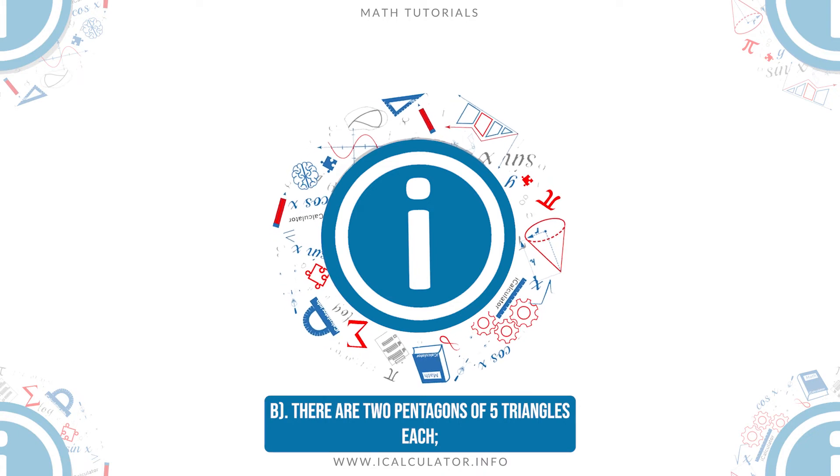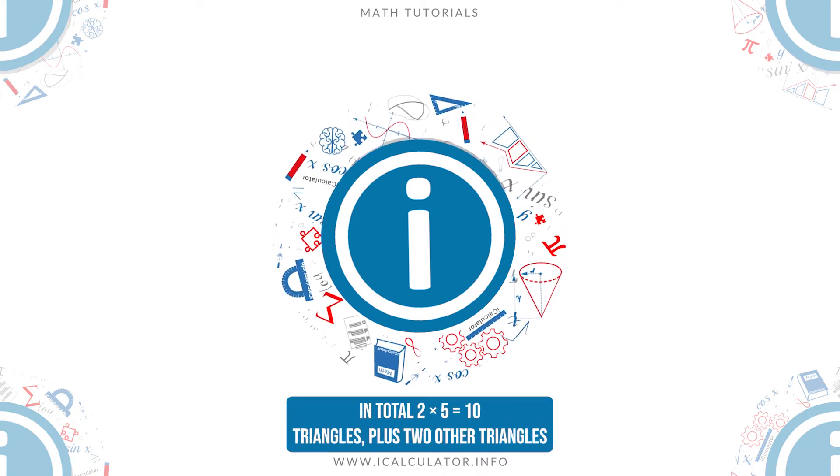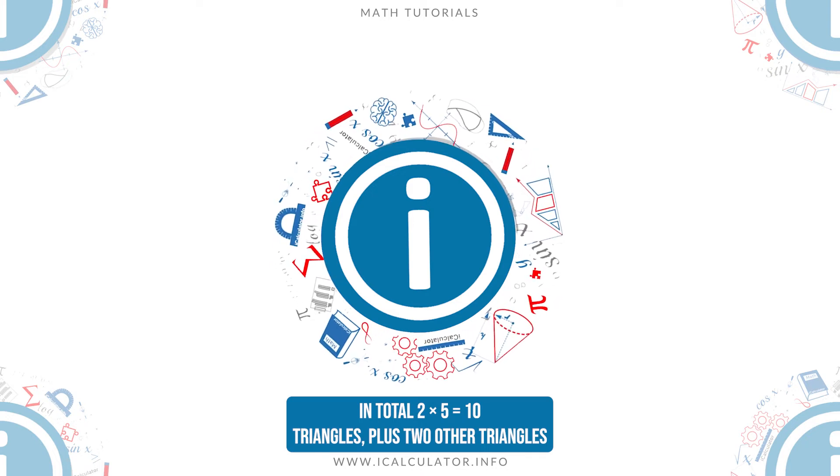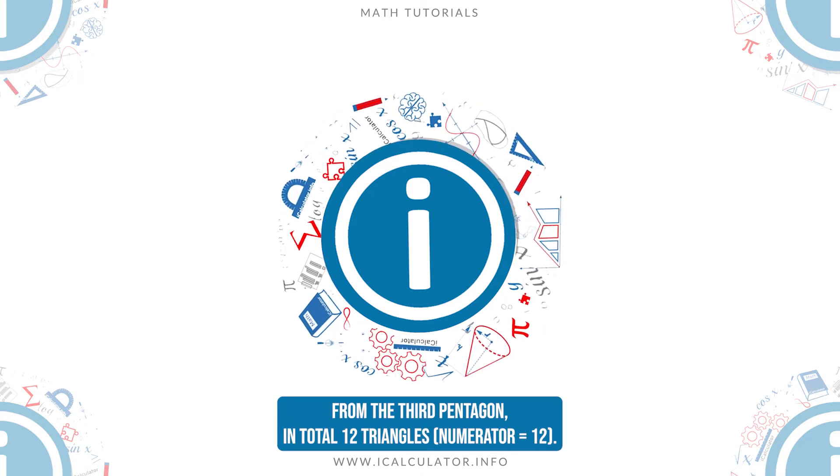B. There are two pentagons of 5 triangles each, in total 2 times 5 equals 10 triangles, plus two other triangles from the third pentagon, in total 12 triangles.